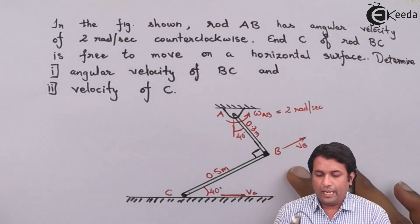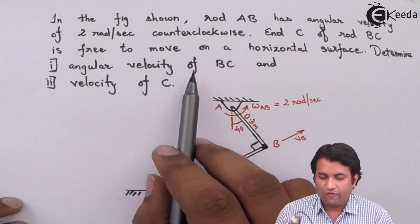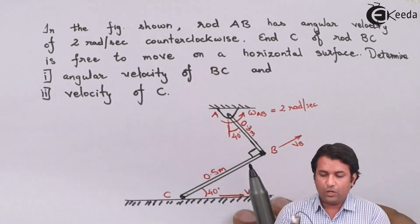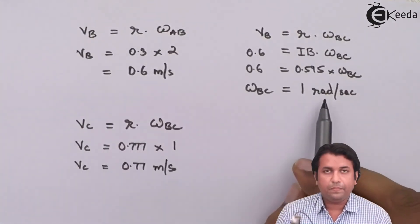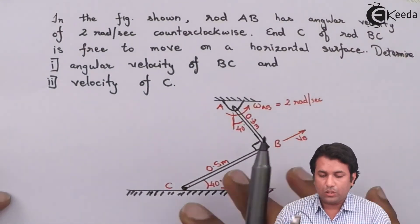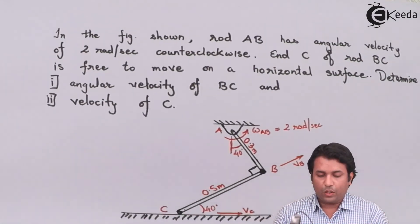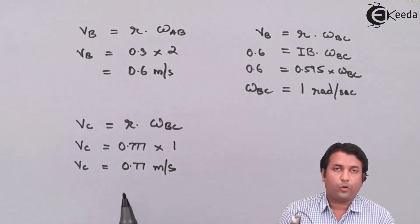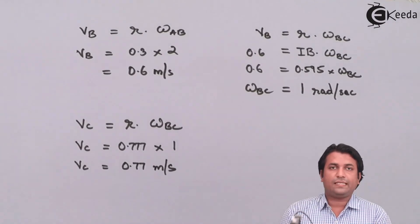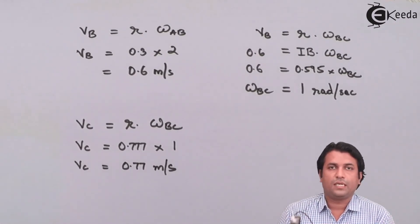As the question asked: the angular velocity of rod BC is 1 radian per second, and the velocity at point C is 0.77 meters per second. I hope this example was easy for you. Thank you.